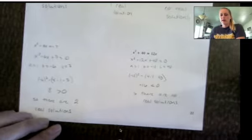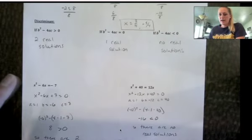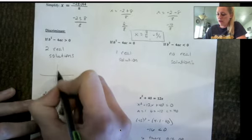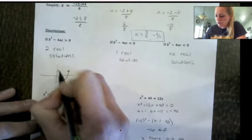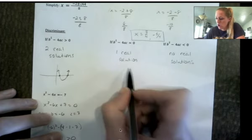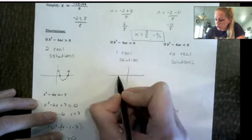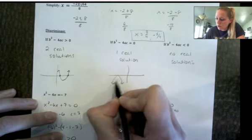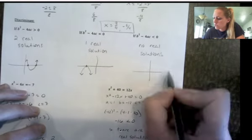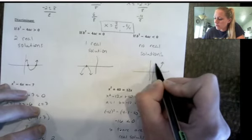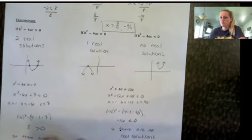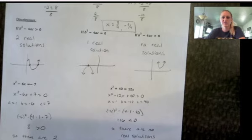One more thing to add about the number of solutions: two real solutions means the quadratic crosses the x-axis twice — those x-intercepts are the solutions. One solution means the parabola just touches the x-axis at one place, with the vertex sitting on the x-axis. No real solutions means the parabola opens up above or opens down below without crossing the x-axis at all. That's it for the section 5.6 video — thanks for watching.